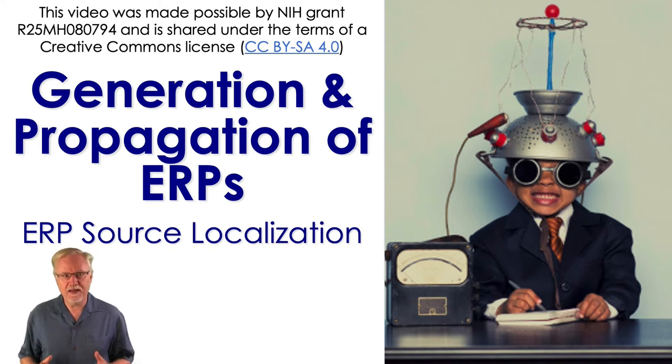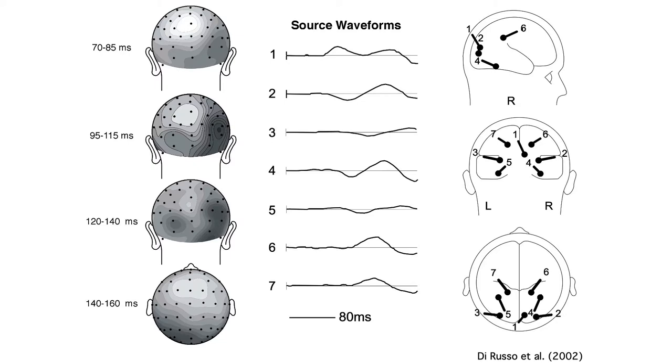There are two main classes of source localization techniques: equivalent current dipole approaches and distributed source methods. In equivalent current dipole approaches, we assume that we can account for the data reasonably well with a relatively small number of equivalent current dipoles. The locations and orientations of the dipoles are fixed for a given subject, but the magnitude of the signal at each dipole varies from millisecond to millisecond, giving us a source waveform.